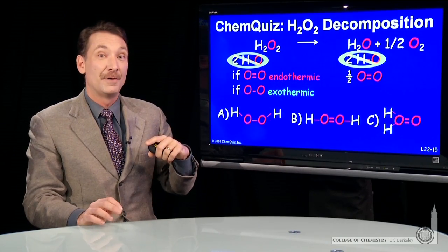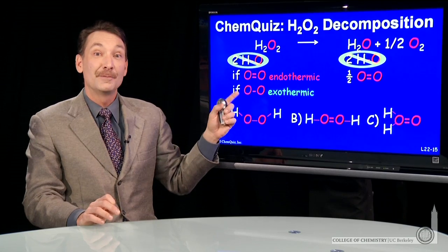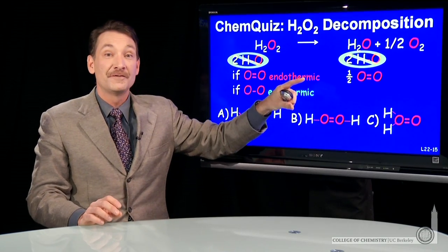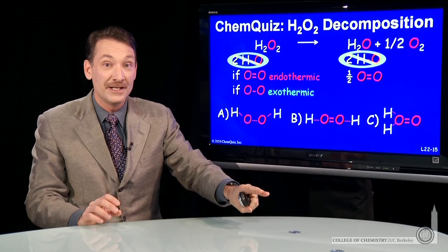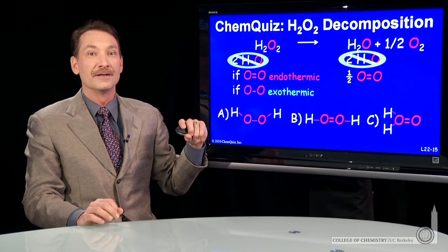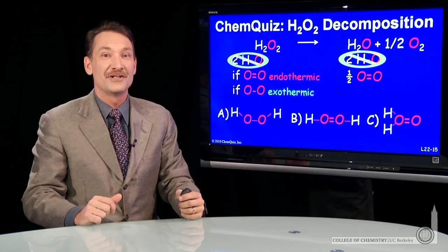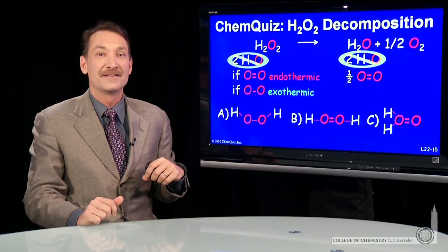Now, what about if it's a single bond? If it's a single bond, it'll be exothermic as long as half a mole of double bonds has more energy than a whole mole of single bonds. That is, the double bonds have to be more than twice as energetically stable as the single bonds. So let's look at our table.